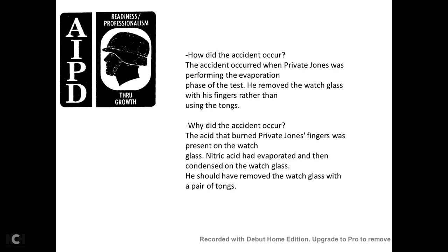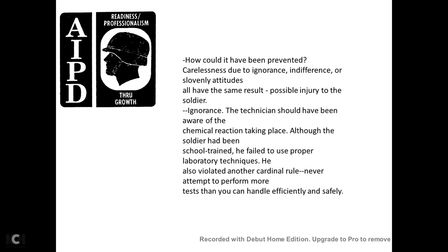How did the accident occur? The accident occurred while Private Jones was performing the evaporation phase of the test — he removed the watch glass with his fingers rather than using tongs. Why did the accident occur? Nitric acid had evaporated and then condensed onto the watch glass. He should have removed the watch glass using a pair of tongs. How could it have been prevented? Through avoidance of carelessness, ignorance, indifference, and slovenly attitudes.